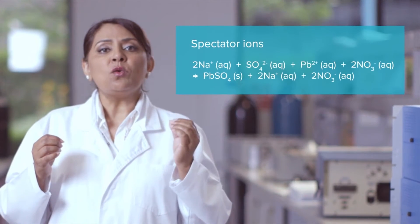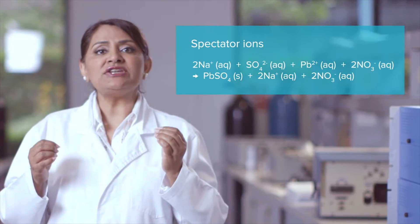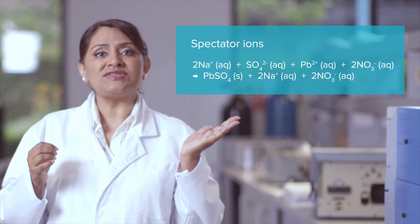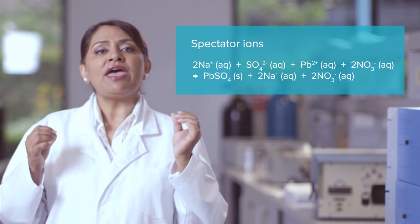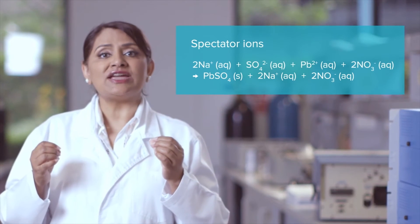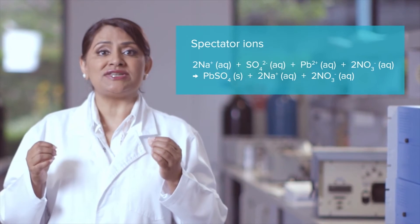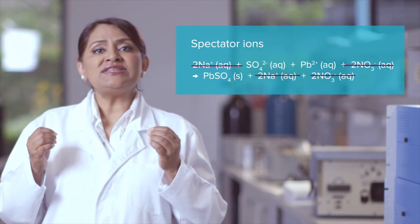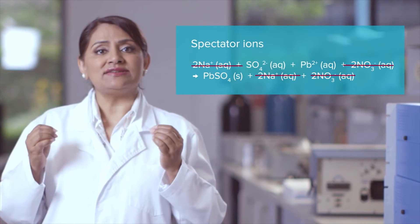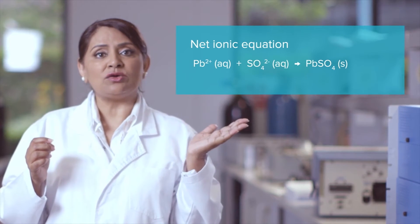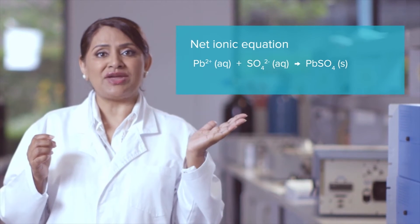This can be better shown by writing an ionic equation. We can see that sodium and nitrate ions appear on both sides of the equation, making them spectator ions as they are not involved in the precipitation process. When spectator ions are cancelled out, we're left with what's called the net ionic equation for the precipitation reaction.